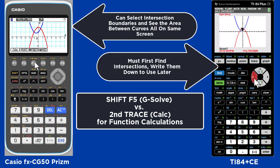In the Casio, you can select the intersection boundaries right on the screen and see the area between the two curves all on the same screen.